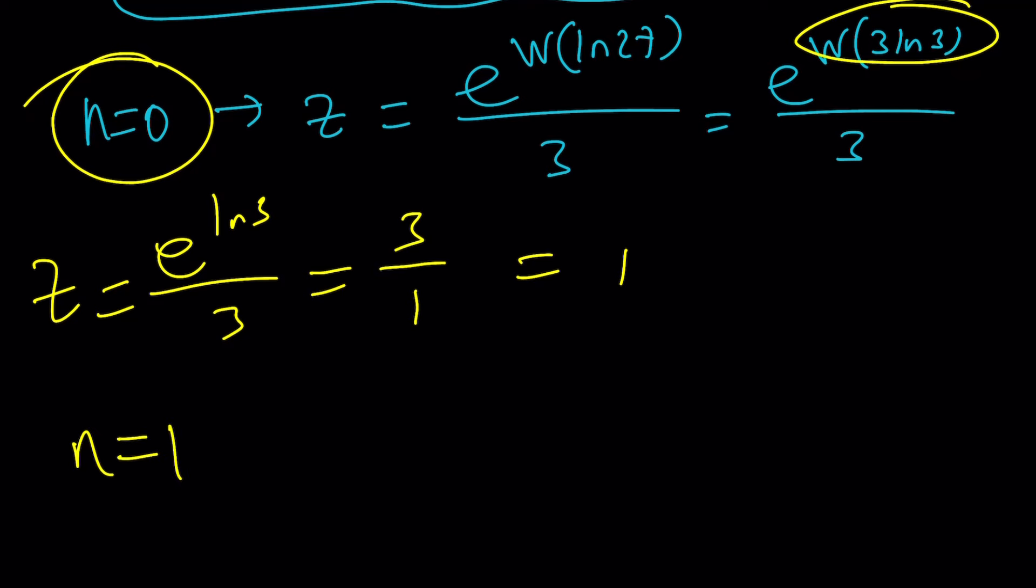For n equals 1, you get a different solution. And that kind of looks like approximately z is going to be 1.5589 plus 2.2633i. Again, that's another complex number.